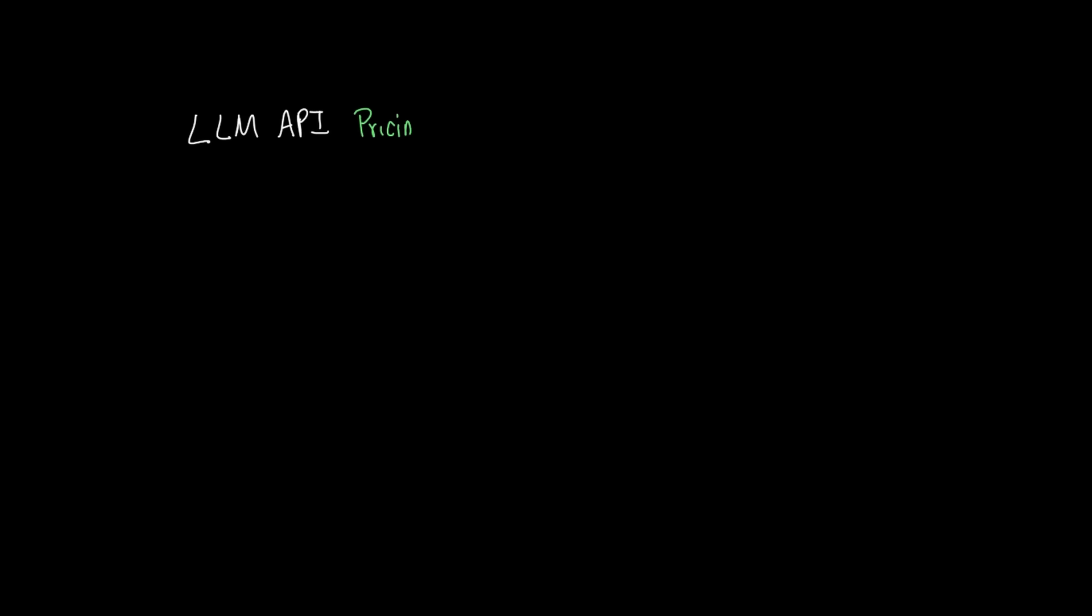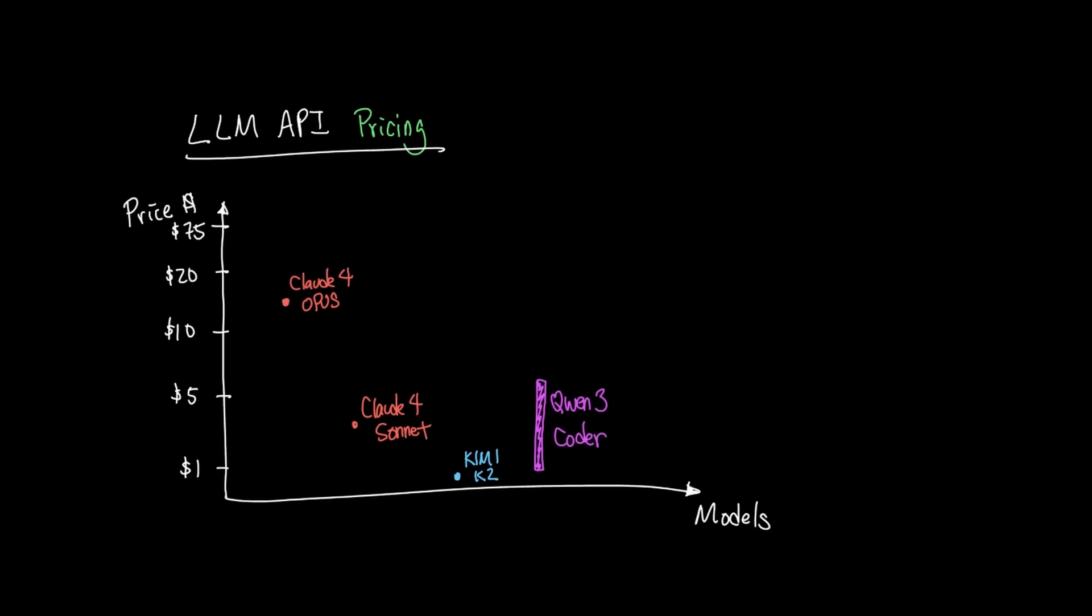One interesting angle is how the pricing will work for the GPT-5 model. For example, Anthropic's pricing is $15 for million input tokens for Cloud Opus 4 and $3 for million input tokens for Cloud Sonnet 4. Meanwhile, open models like Kimi-K2 is priced at a range of $0.15 to $0.60 per million input tokens, and for Quan 3 Coder, pricing is around $1 to $6 per million input tokens depending on the token size.